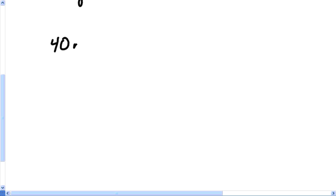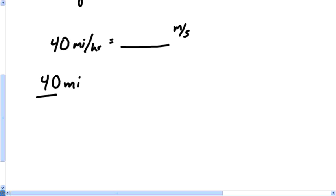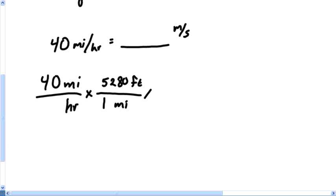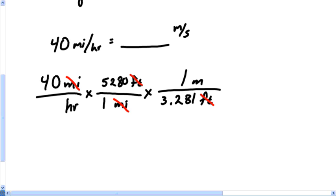The most basic thing: if you have a problem where somebody tells you 40 miles per hour, you need to be able to convert that to meters per second. We do that all the time in physics. The trick is to draw your conversion line, put your x, and write it so that hours is on the bottom and miles is on top. There are 5280 feet in one mile, and 3.281 feet in a meter.